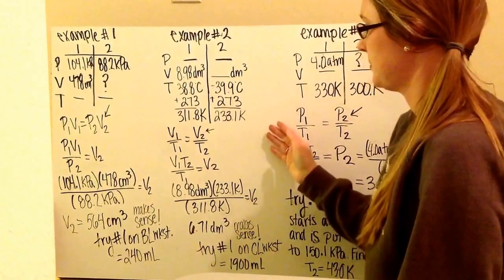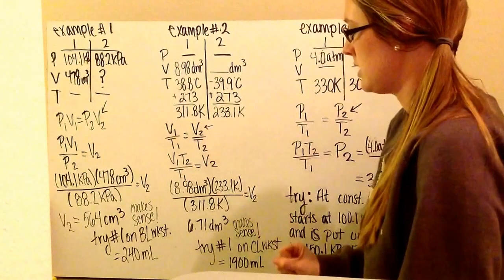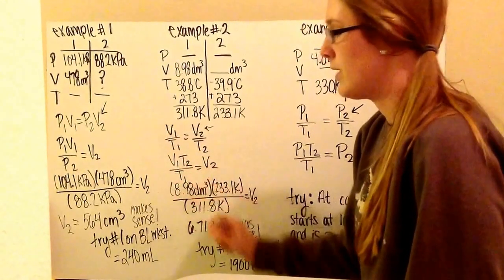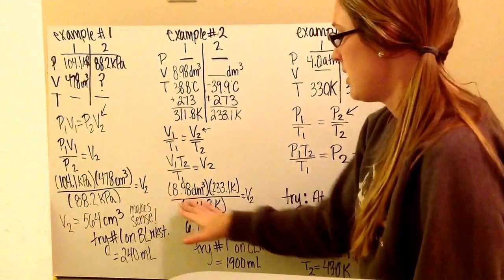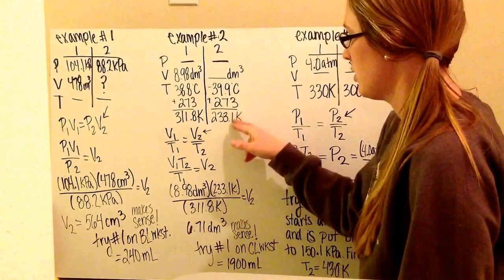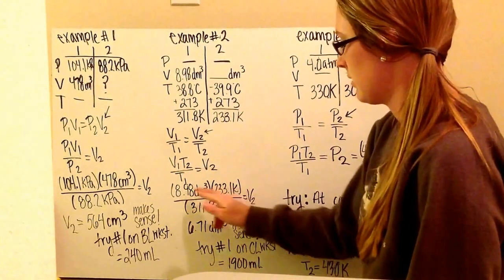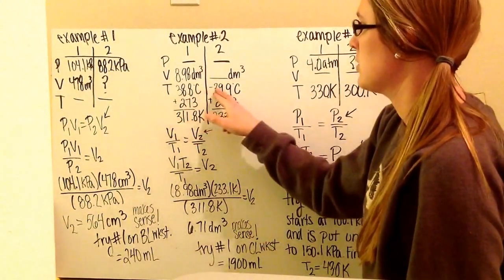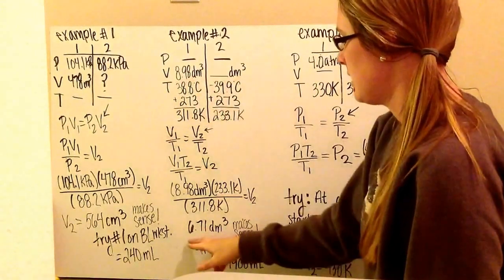With constant pressure, I use Charles' Law: V1 over T1 equals V2 over T2. I rearrange to solve for V2 by multiplying both sides by T2, giving me V1 times T2 divided by T1. Rearrange with variables first, then plug in numbers: 8.98 decimeters cubed times 233.1 Kelvin, divided by 311.8 Kelvin. I get 6.71 decimeters cubed. This makes sense because my temperature decreased, therefore my volume must also decrease — it goes from 8.98 down to 6.71.